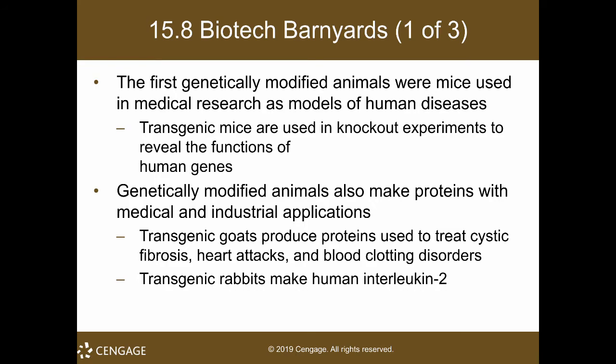Aside from plants, you can also have animals. The first genetically modified animals were mice, used in medical research as models of human disease. These transgenic mice are used for knockout experiments — they knock out genes to determine their functions, because one way to know the importance of something is to lose it. They have mice that have cancer, diabetes, and various diseases, and they model human diseases in mice to study how to cure them. The drugs you have on the market are a product of that research.